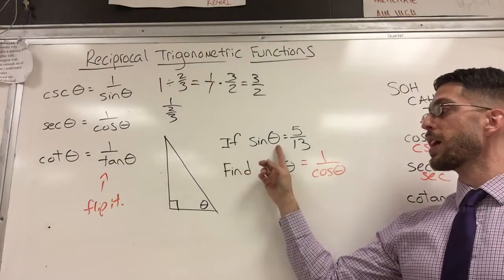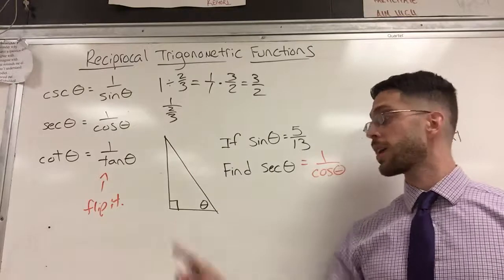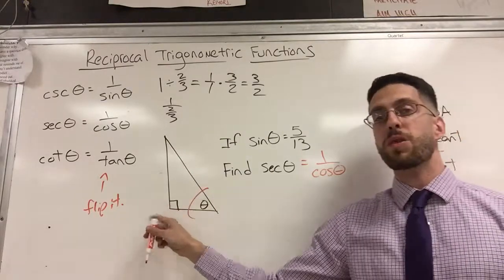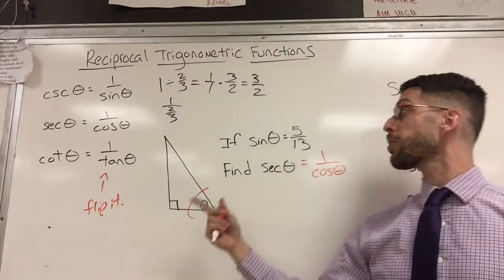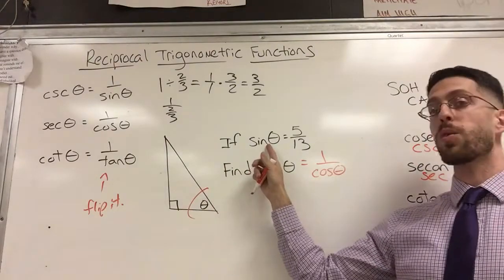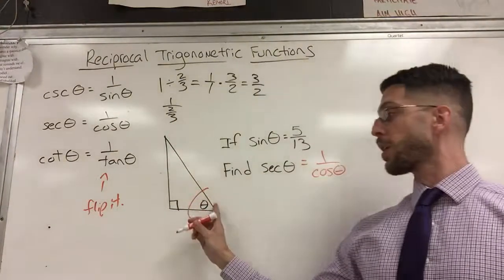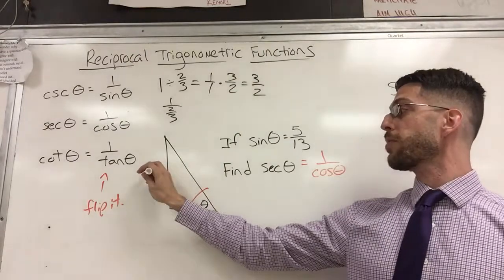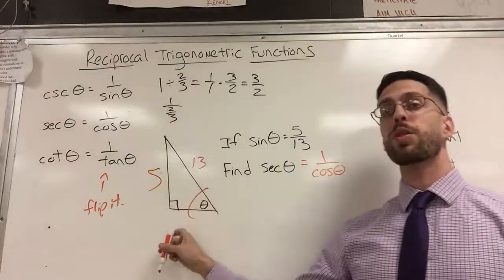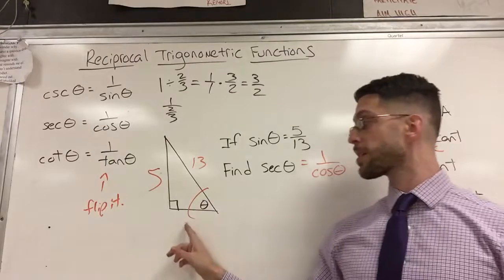So now that I know sine, I can actually fill out my diagram. And they might not even give you a diagram. You can imagine it or draw it yourself. So sine I know is opposite over hypotenuse. So opposite is five. Hypotenuse is 13. I'm going to use the Pythagorean theorem to find the missing side.